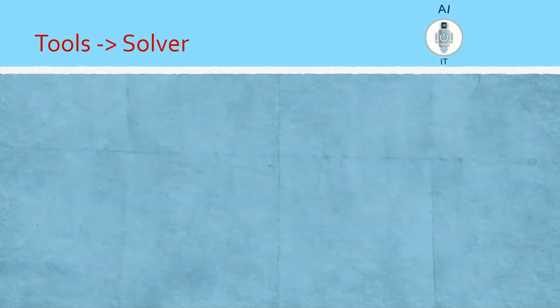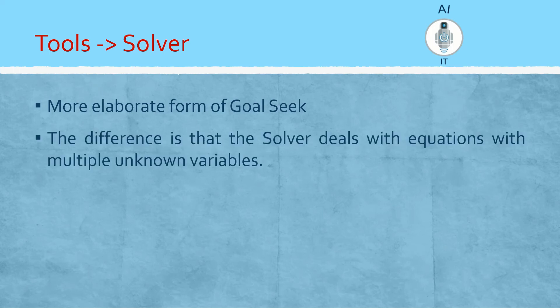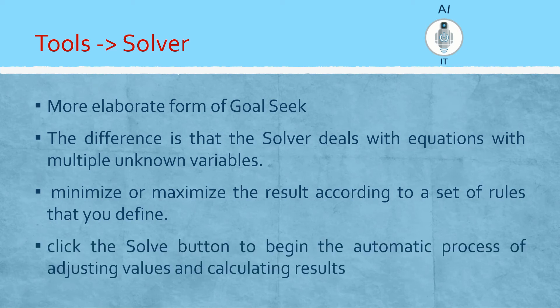The third and final topic is Tools > Solver, which is an elaborate form of goal seek. The difference is that solver deals with equations having multiple unknown variables, whereas goal seek can only use one argument. Solver will maximize or minimize the result according to a set of rules we define, and with a click of a button it automates the process of adjusting values to give desired results.